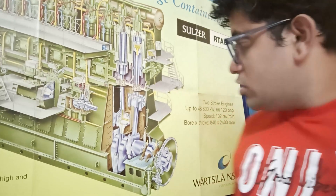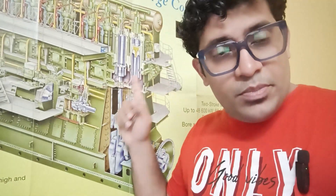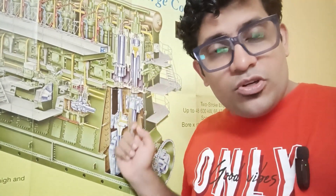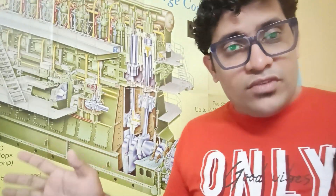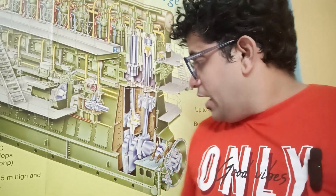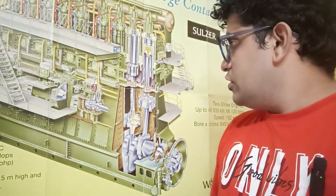Lube oil flows to the crosshead, from the crosshead it goes to the piston, from the piston it comes back to the crosshead, and from the crosshead it goes to the sides — the shoe guides and sliding surfaces. All the oil is then scraped down back to the crankcase.